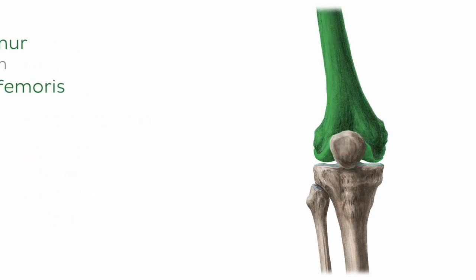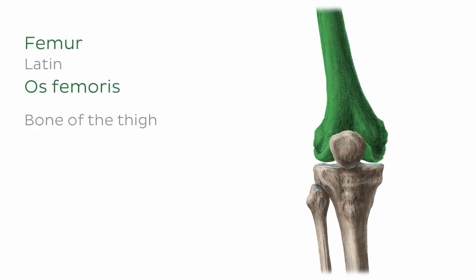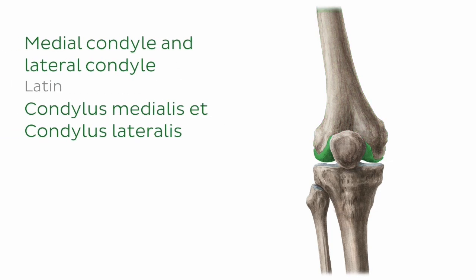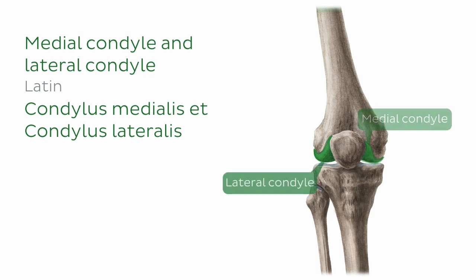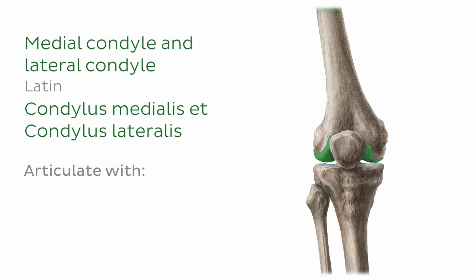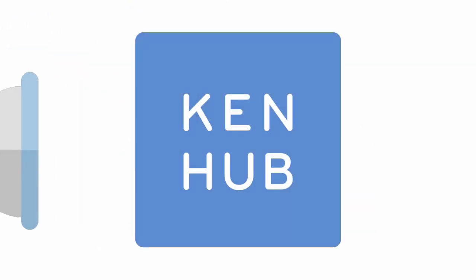As I just mentioned, the femur is a bone of the thigh, so I don't want to give too much of our time to it. Today we'll be focusing on the articular surfaces of the femur that are involved in the knee joint. Distally, the femur has two condyles: a medial condyle and a lateral condyle, which articulate with one of the bones of the leg, the tibia.